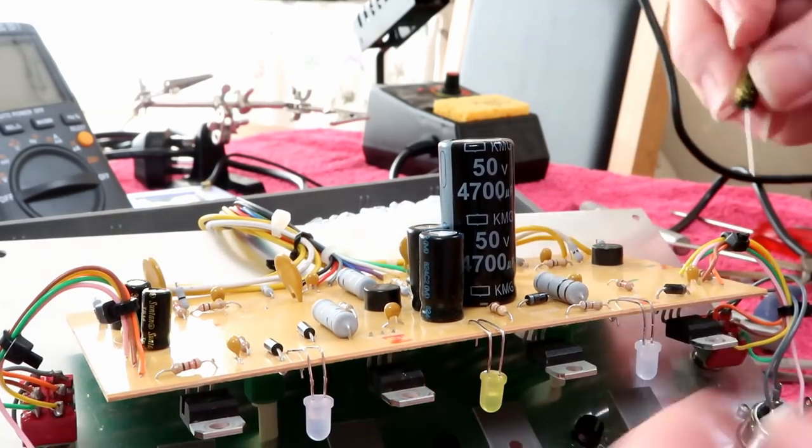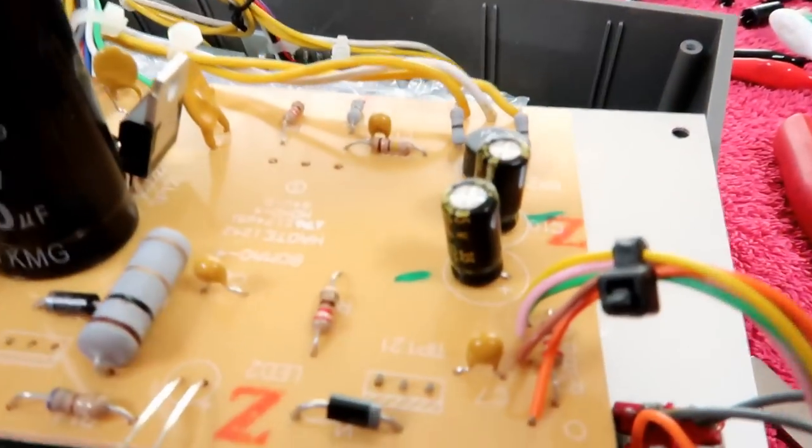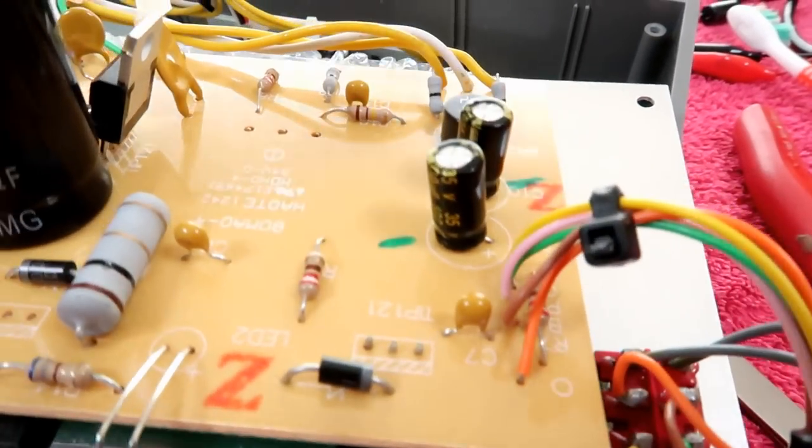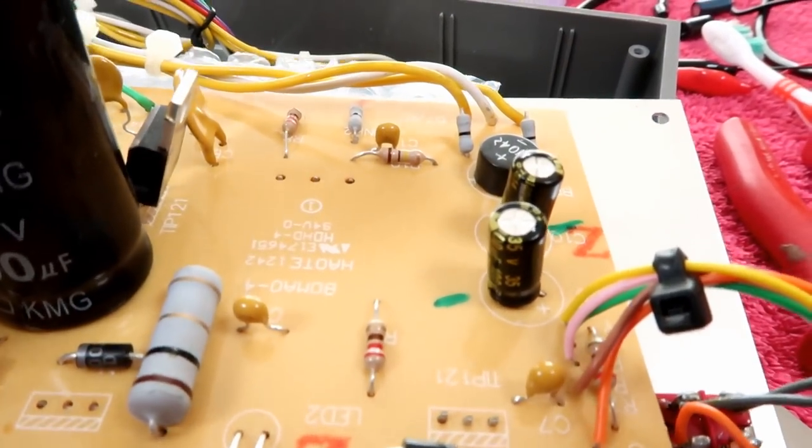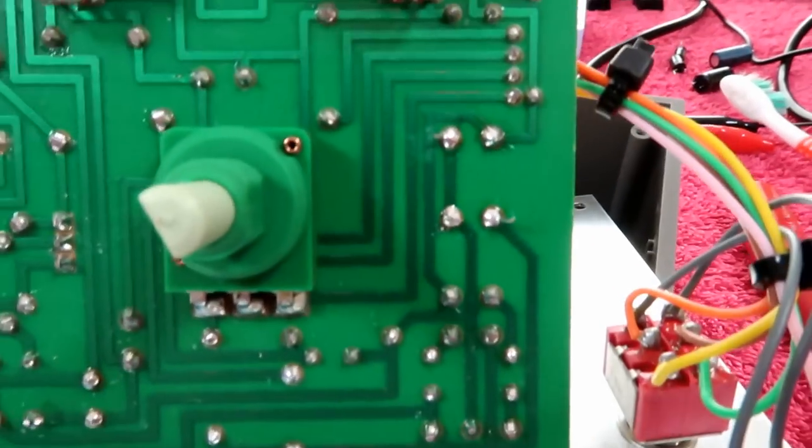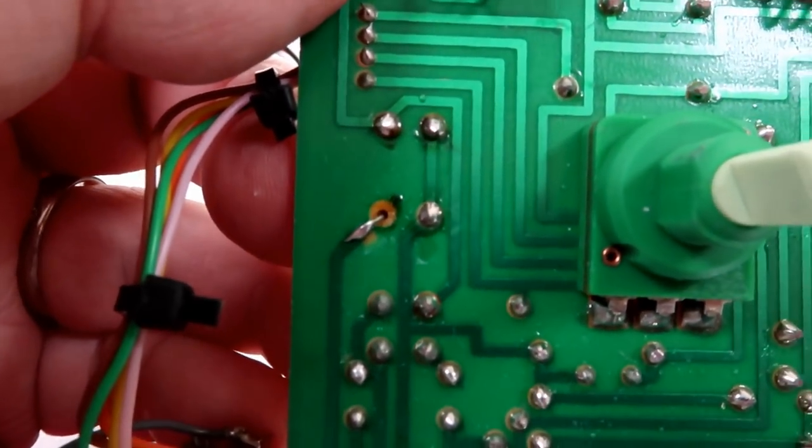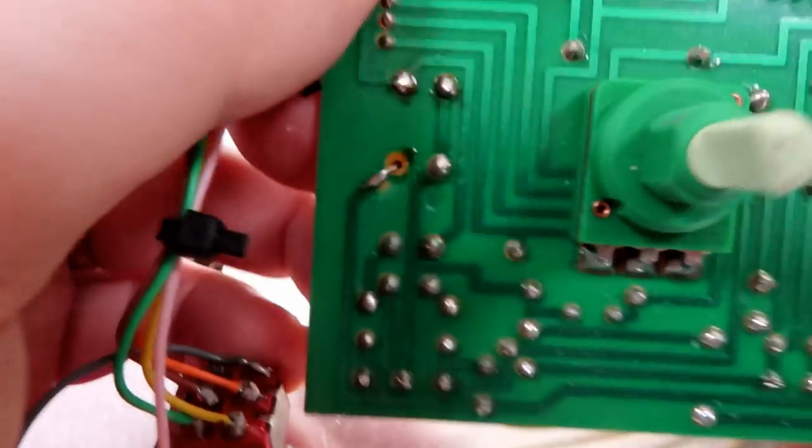So just taking the camera off the tripod for a minute, we now have that channel's capacitors changed and this channel's capacitors changed. And underneath we've done a nice neat job there and a nasty bodge there. As I say, it will still work, but it's not quite as elegant as I would have liked.